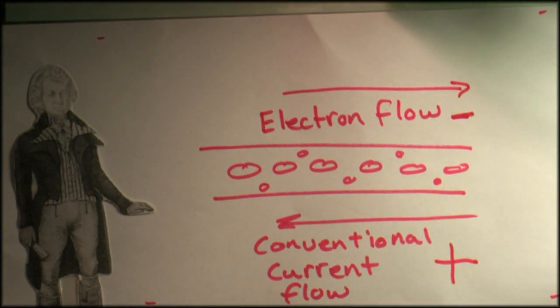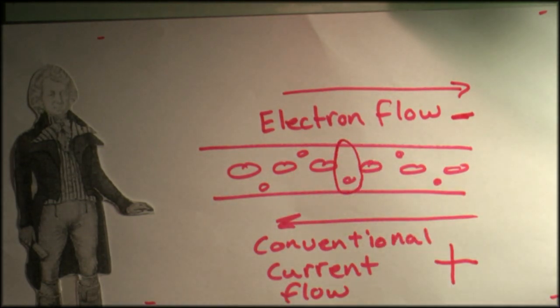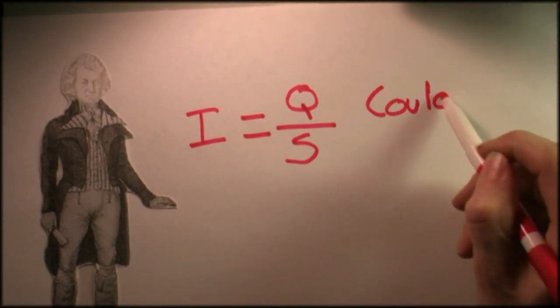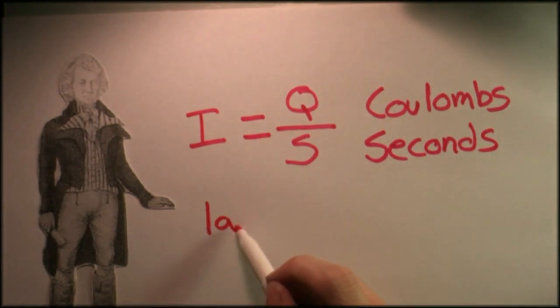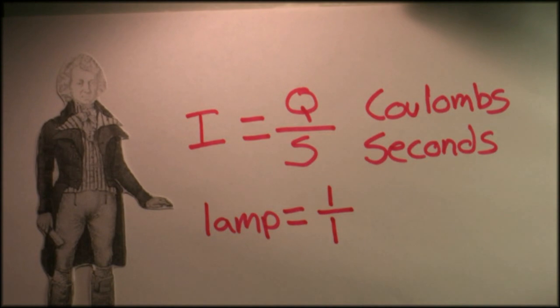Current is measured by the number of electrons that pass by a point in a given time. Amperage, indicated by the letter I, is the amount of charge per second, and the charge is in coulombs. One coulomb per second is one amp.